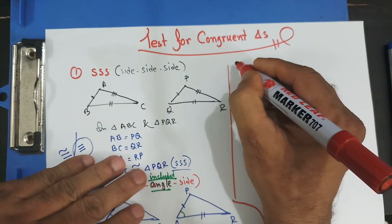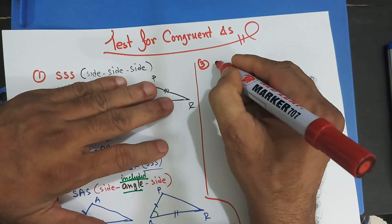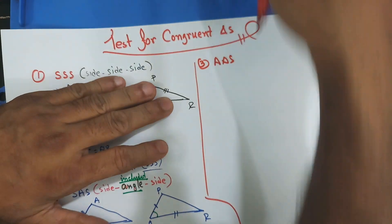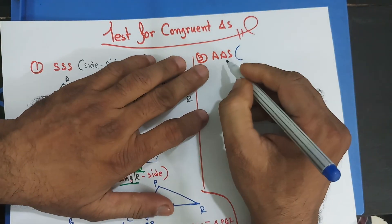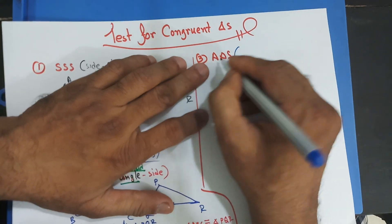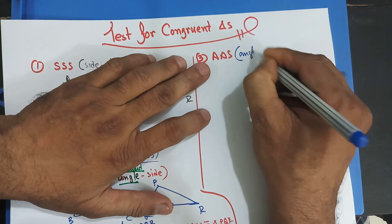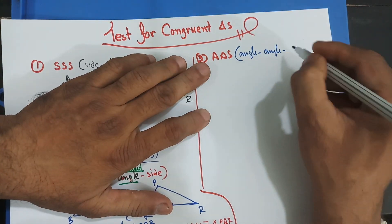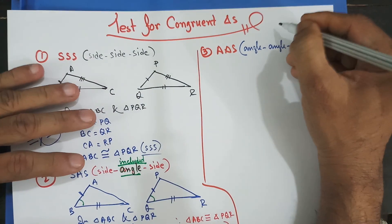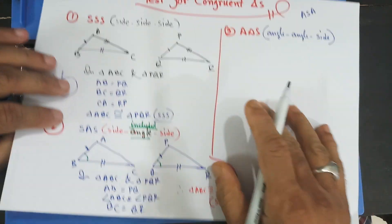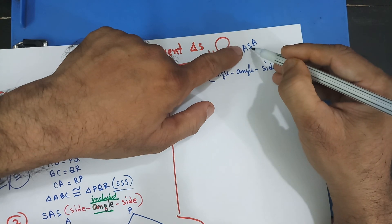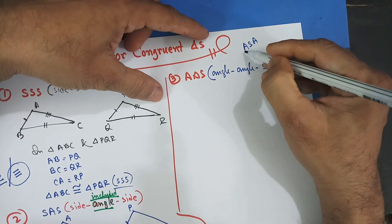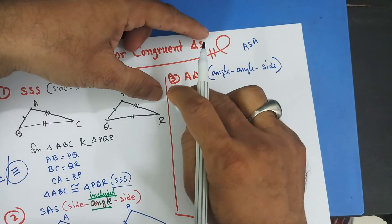Test of congruency number three is AAS — angle, angle, and corresponding side. Some may write ASA with the angle in the middle, meaning the side is included between two given angles. But that is not required here — it should be a corresponding side, not necessarily the included side. Any corresponding side will work for the congruency test.